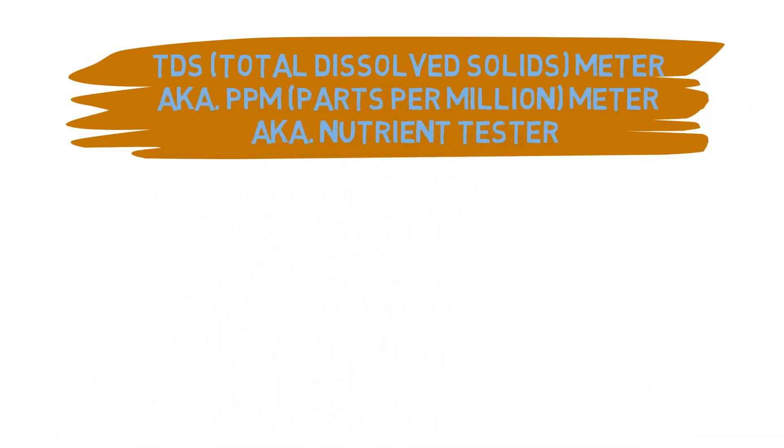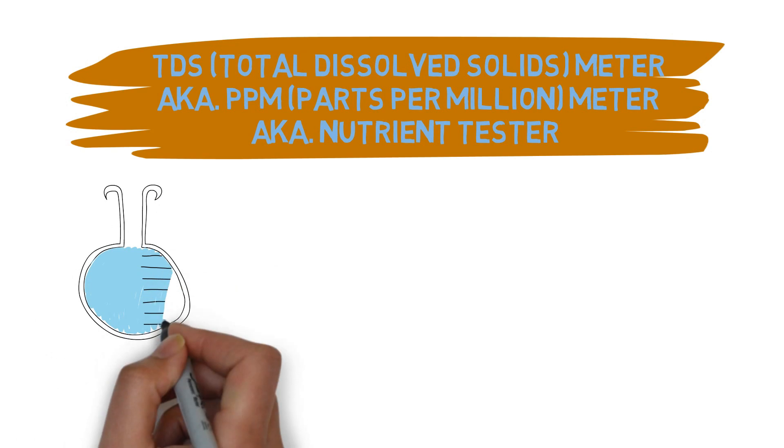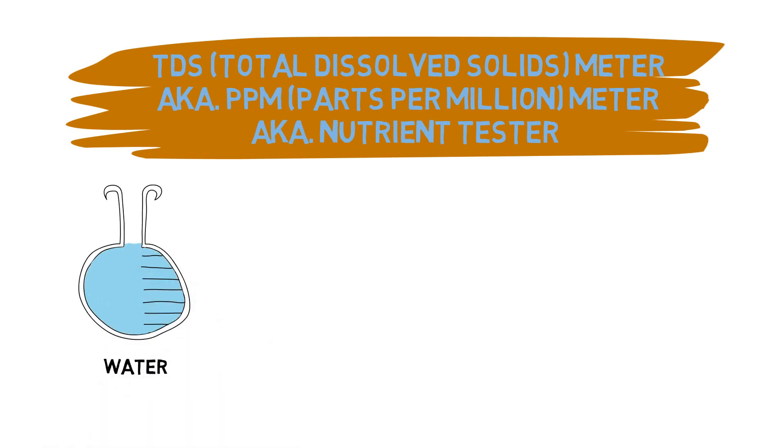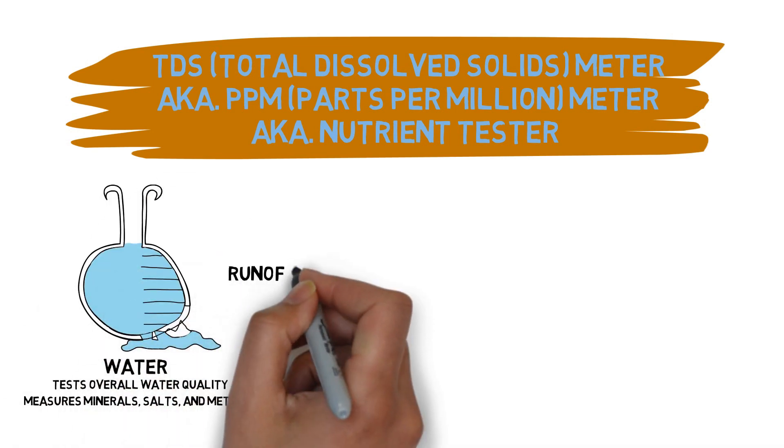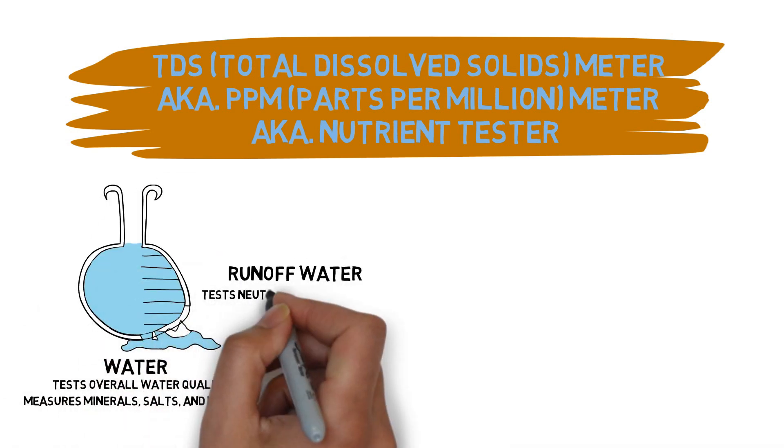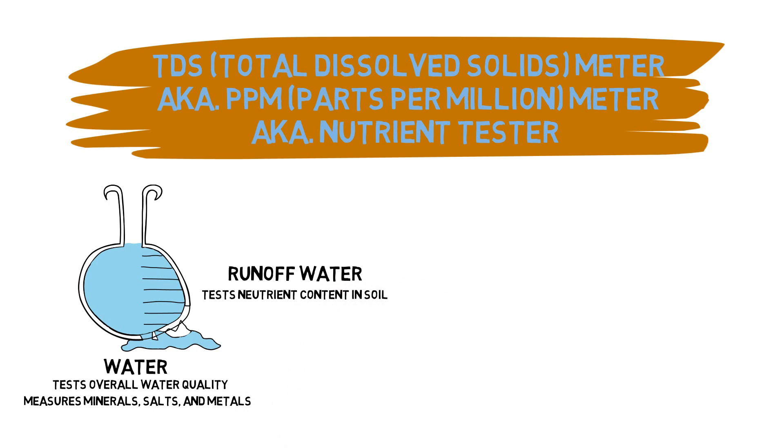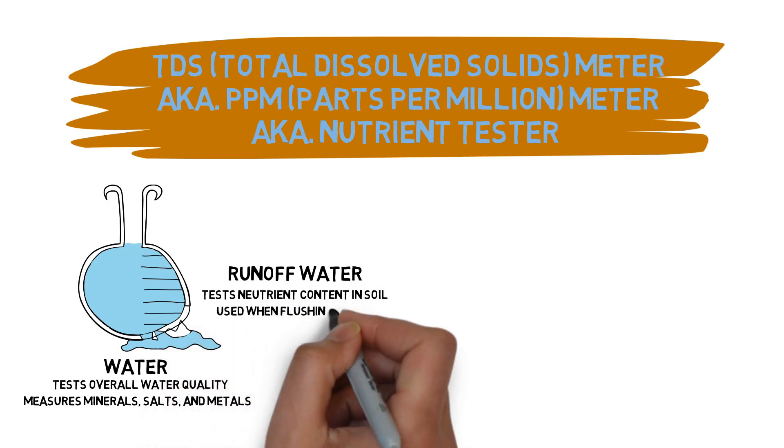This does a couple of things. First if I use it on plain water it'll let me know the overall water quality and how much minerals, salts and metals are in the water. This is useful both on water before watering to know if it's contaminated and on the runoff water to see how much nutrients are left in the soil, for example when flushing the plants before harvest.